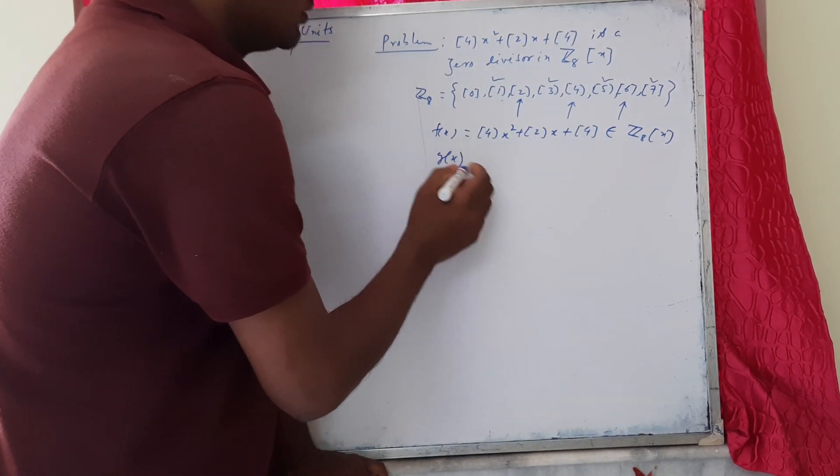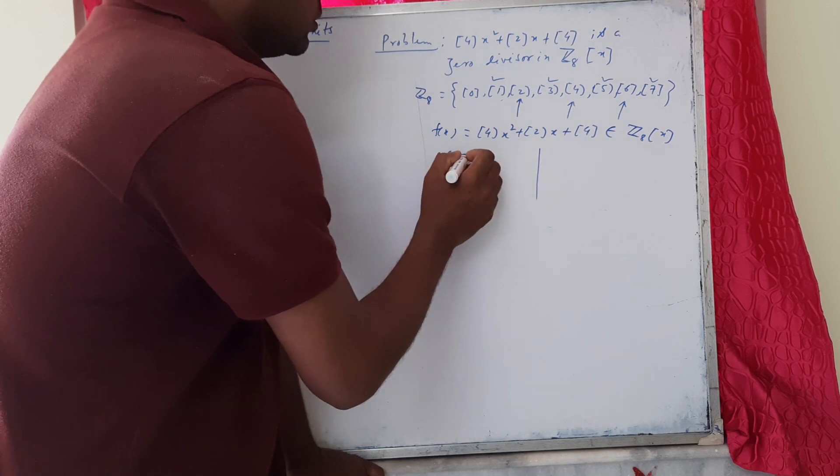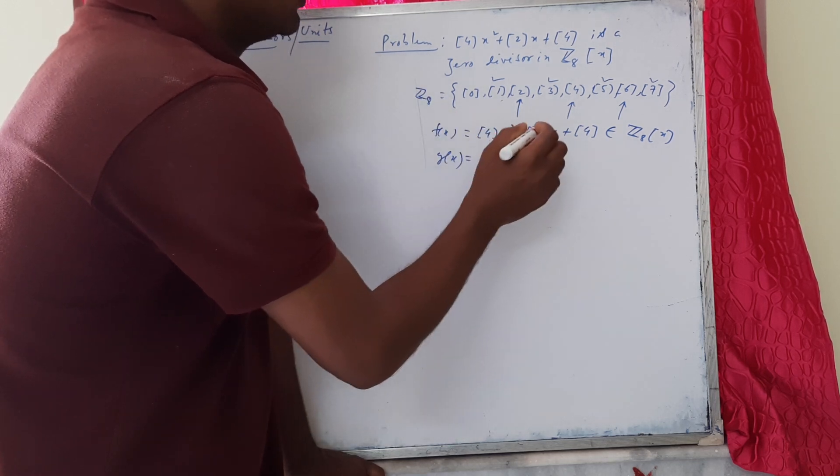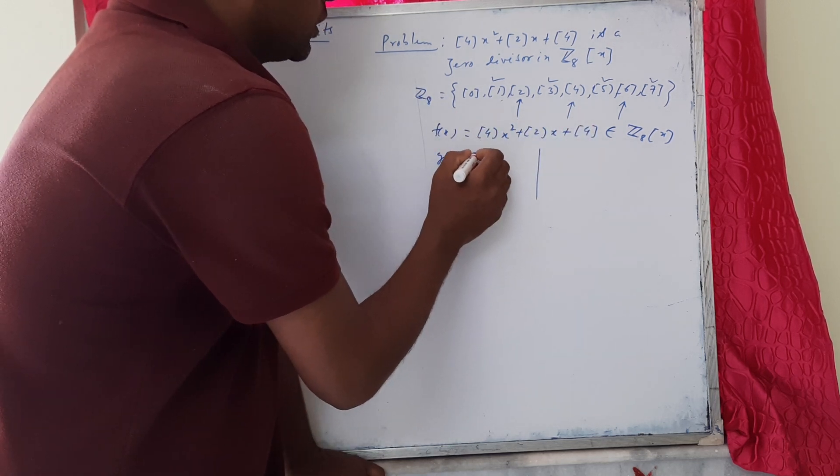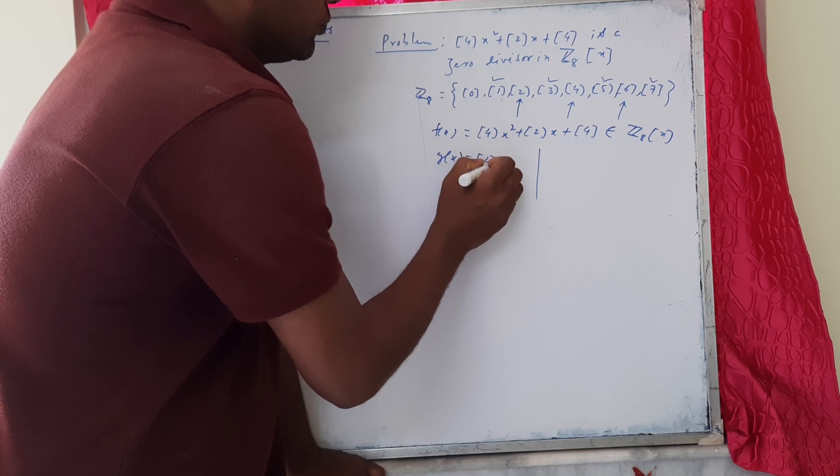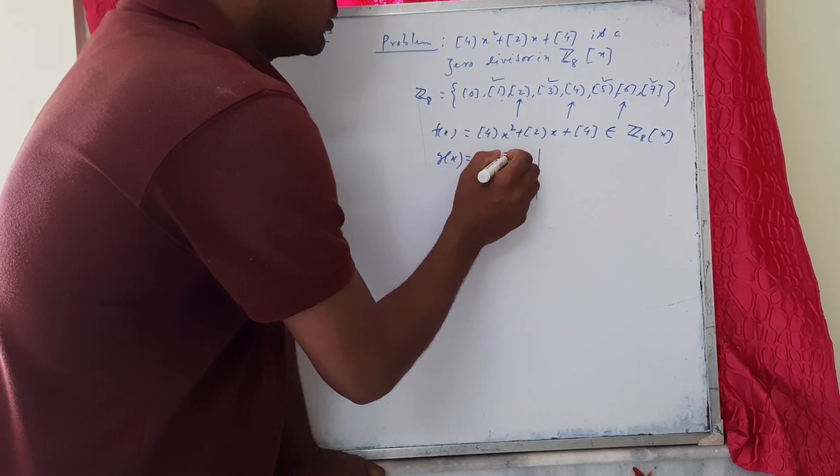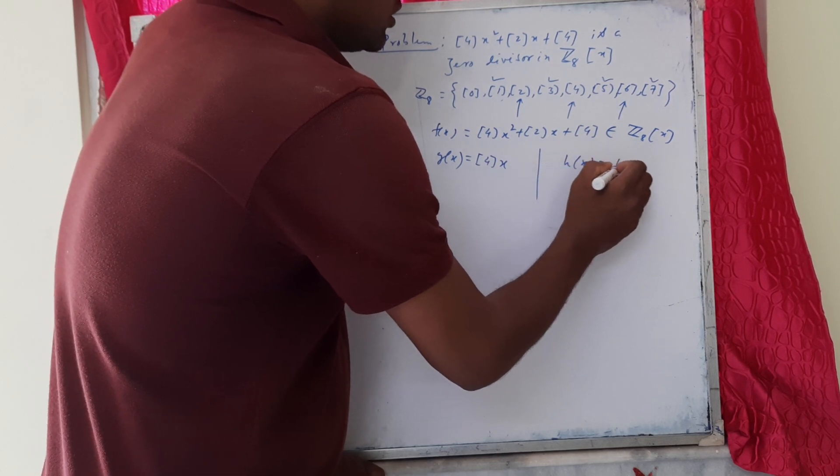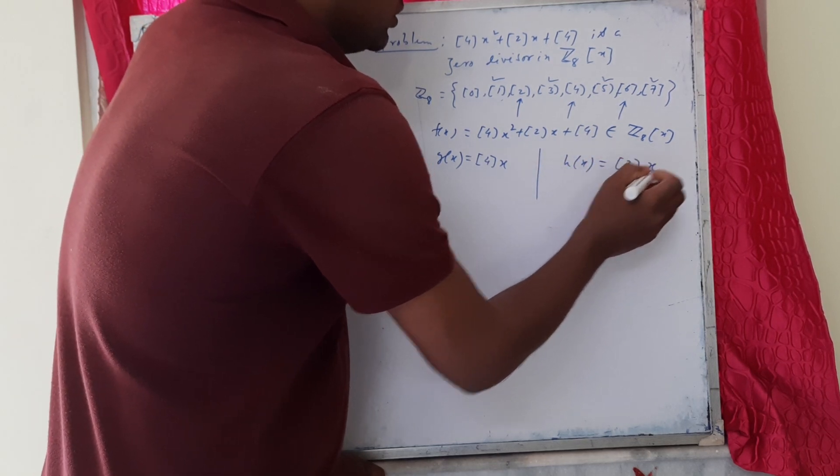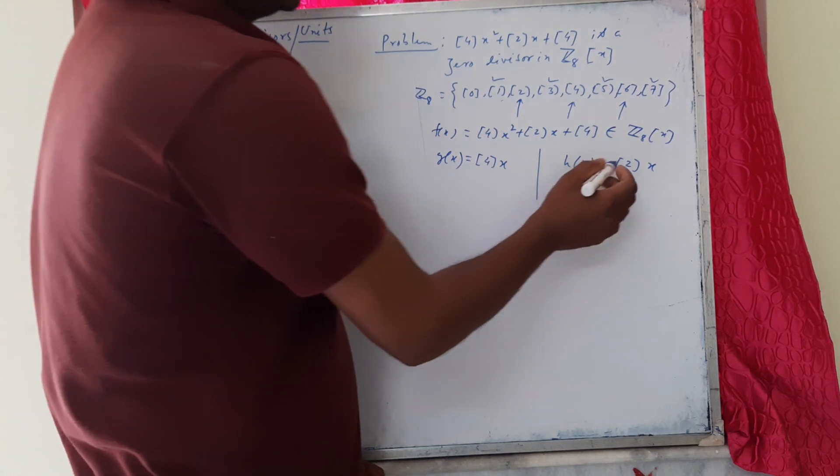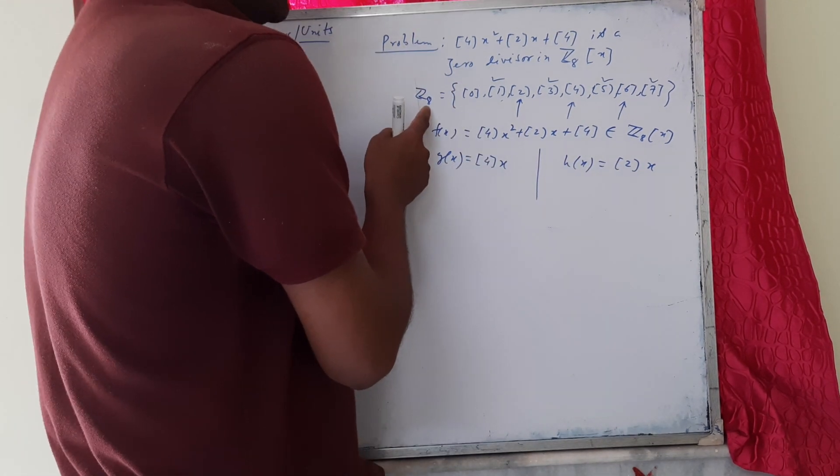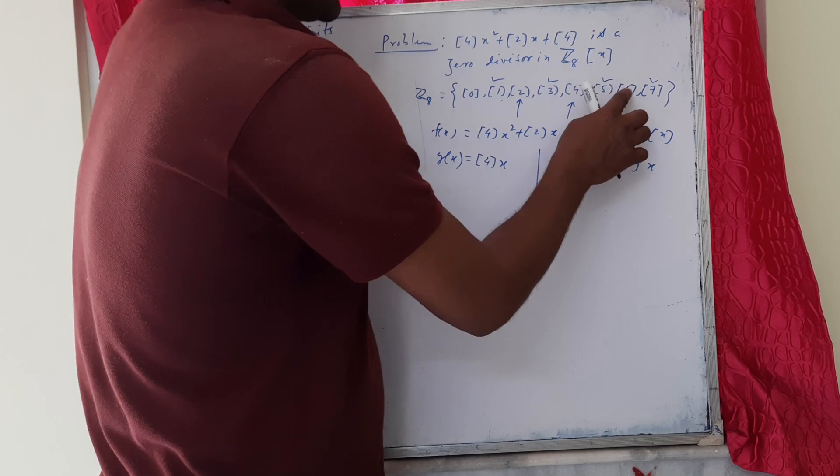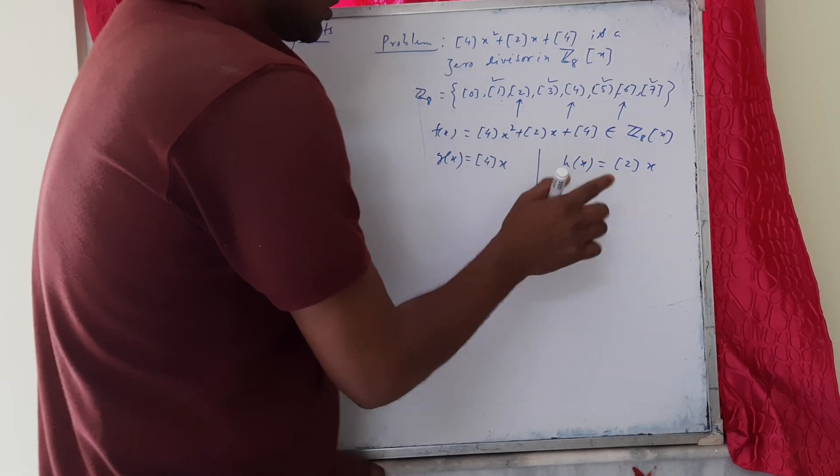If we take two types of polynomials: g(x) as class 4x and h(x) as class 2x, because both class 2 and class 4 are zero divisors in Z₈. We can also take class 6x.